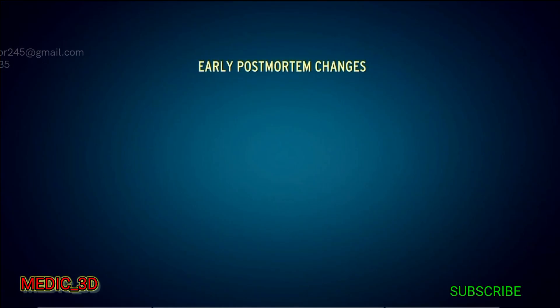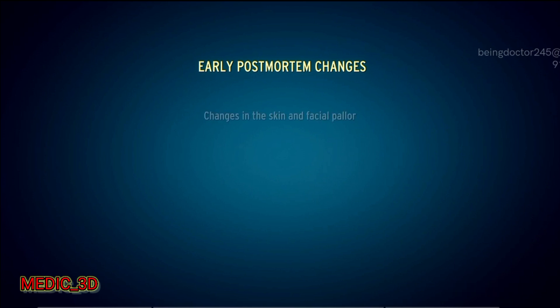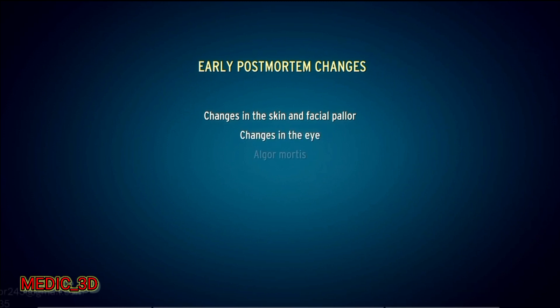Early post-mortem changes can be elaborated under five headings: changes in the skin and facial pallor, changes in the eye, algor mortis, livor mortis, and rigor mortis.